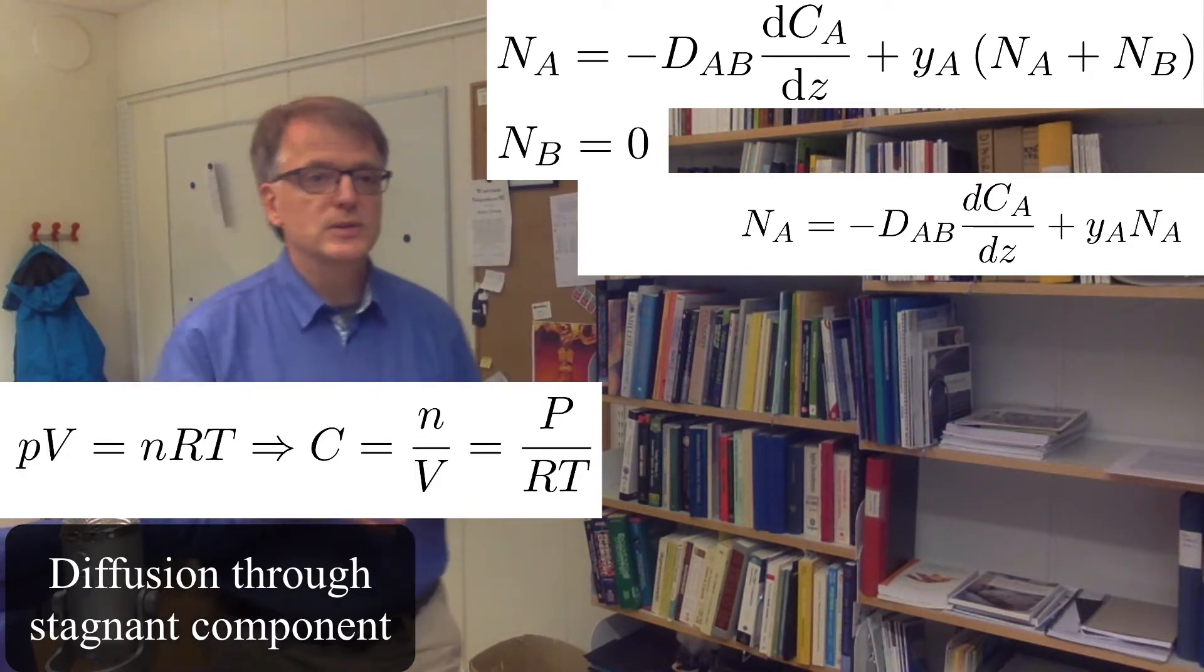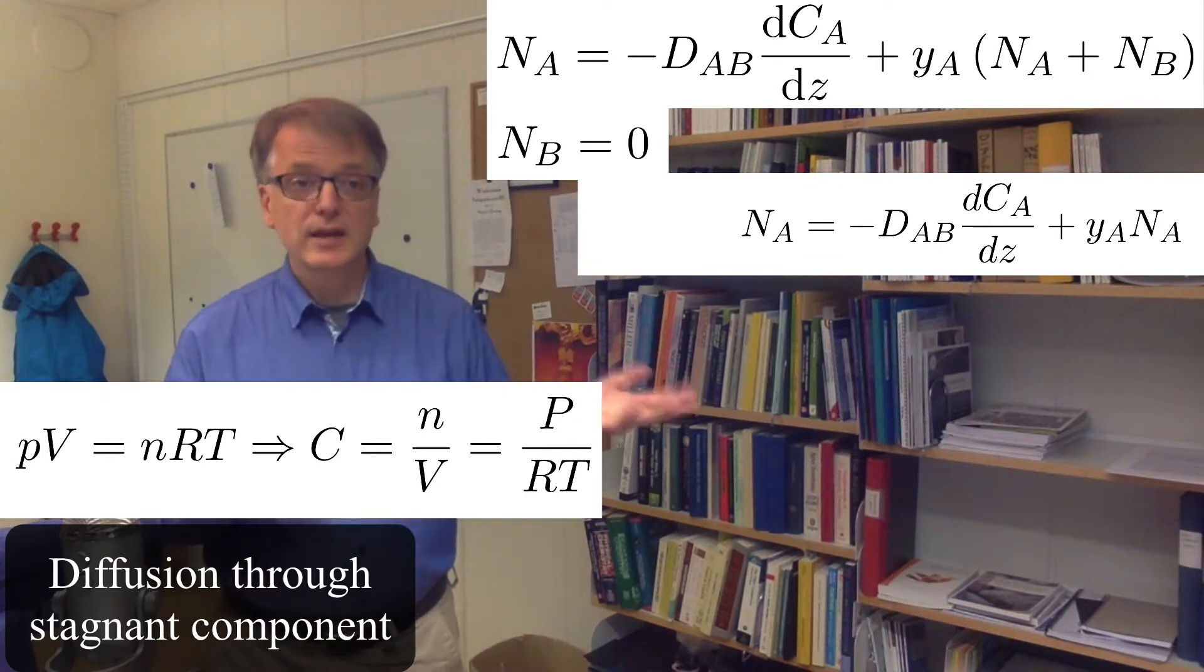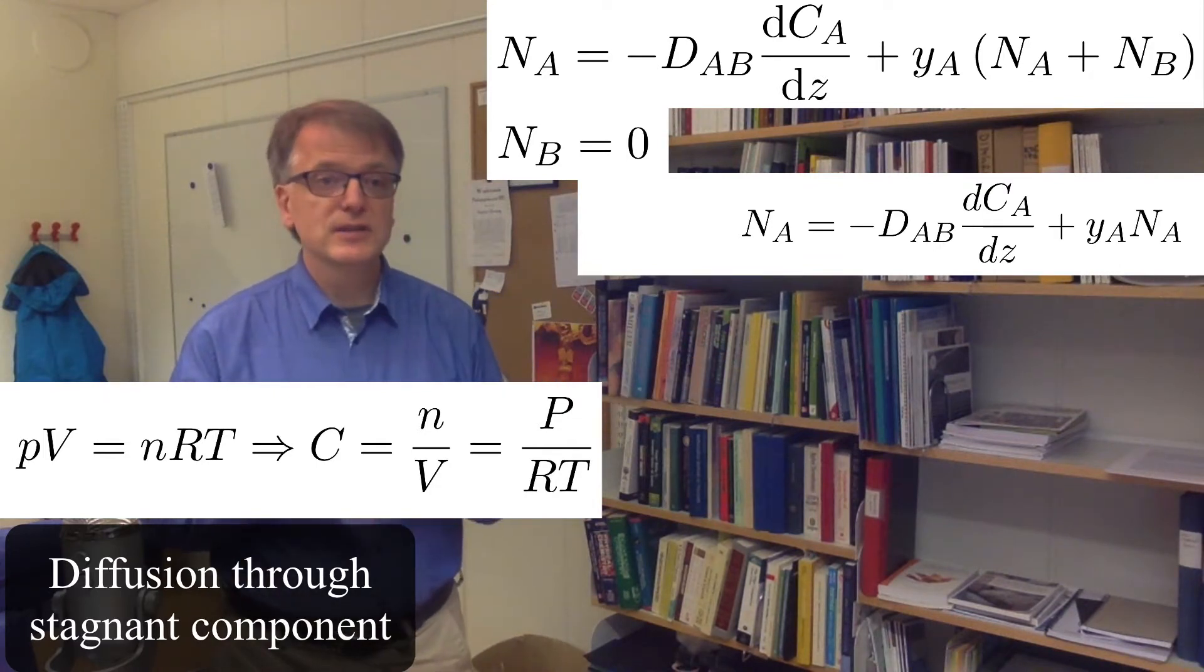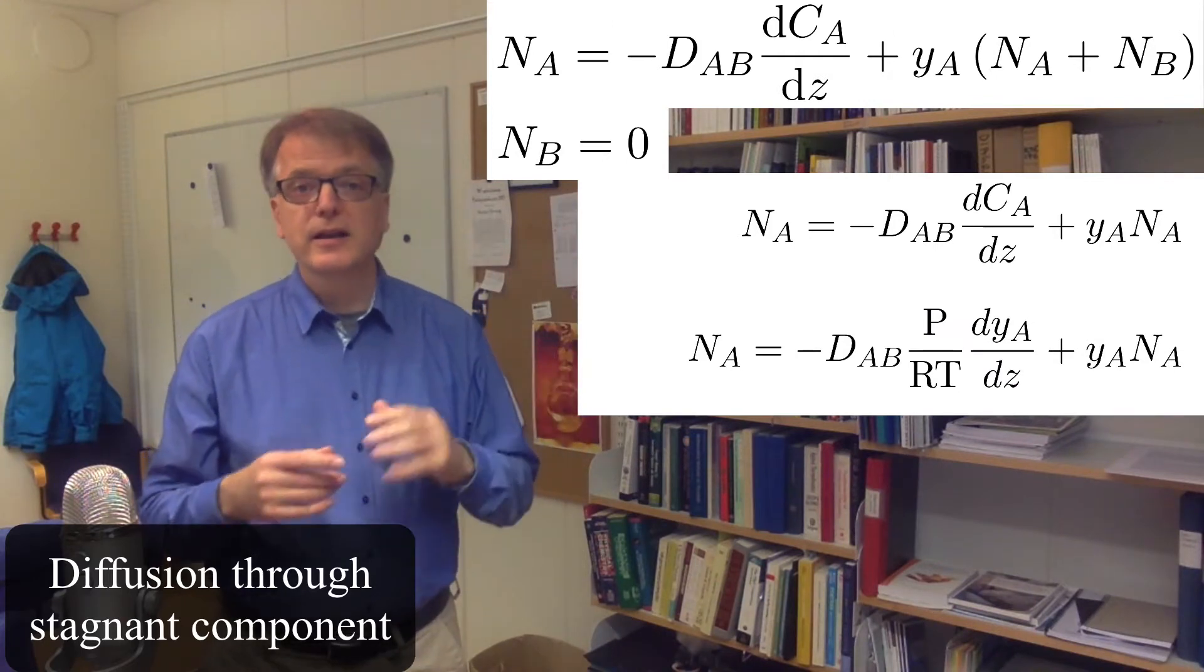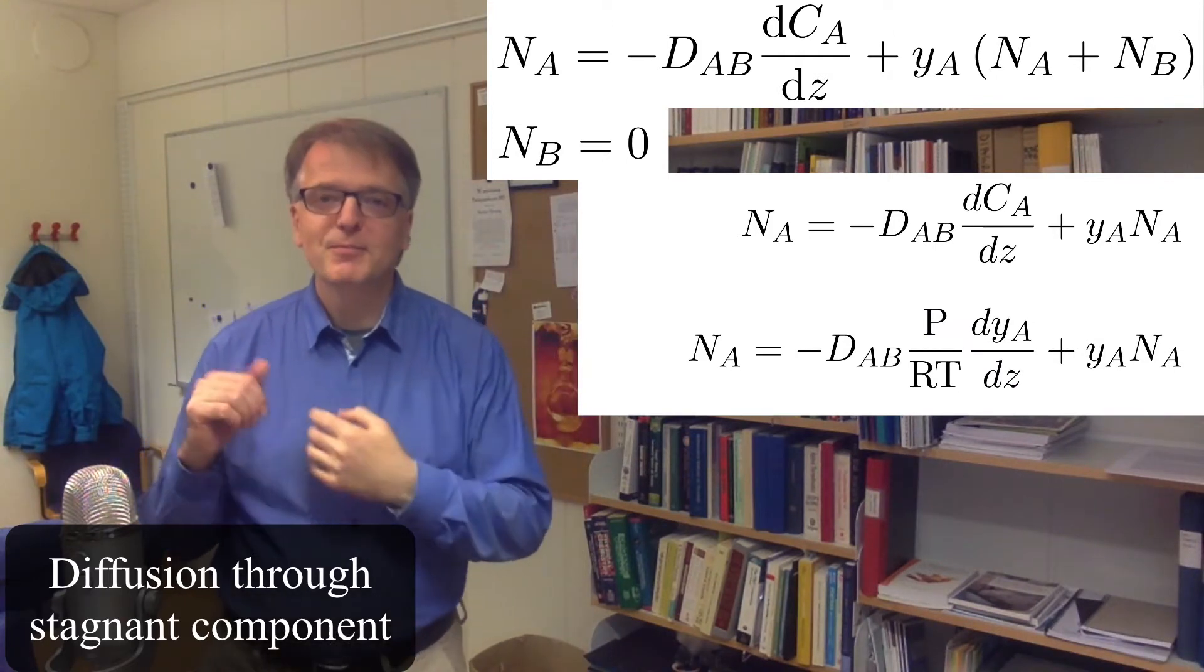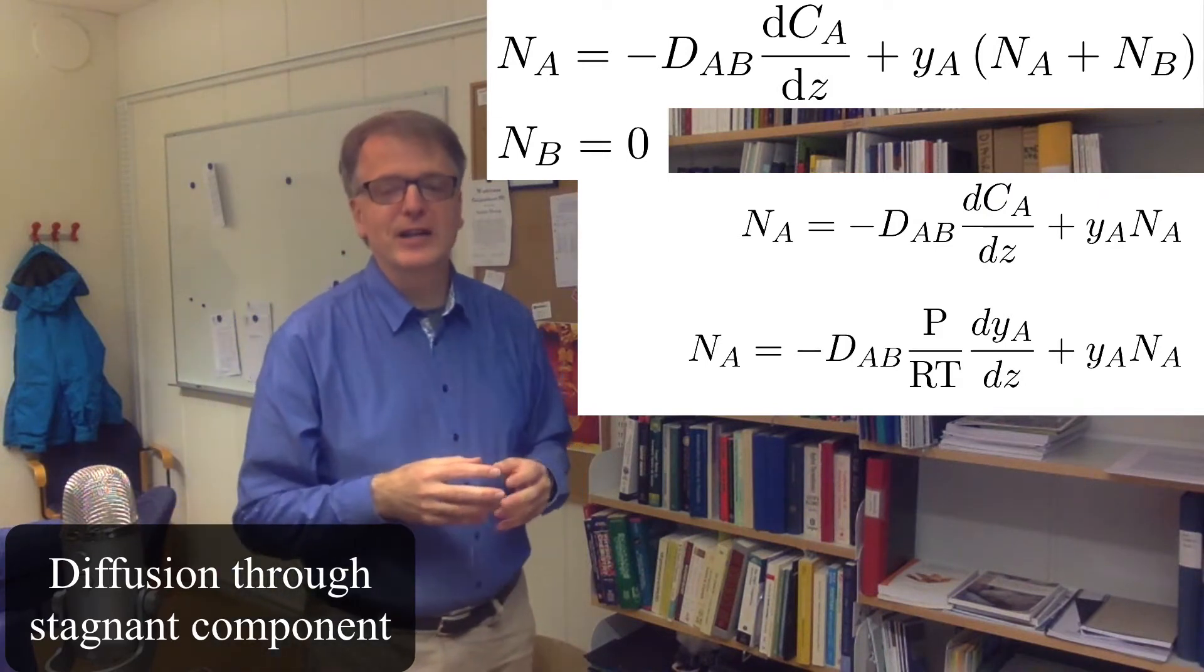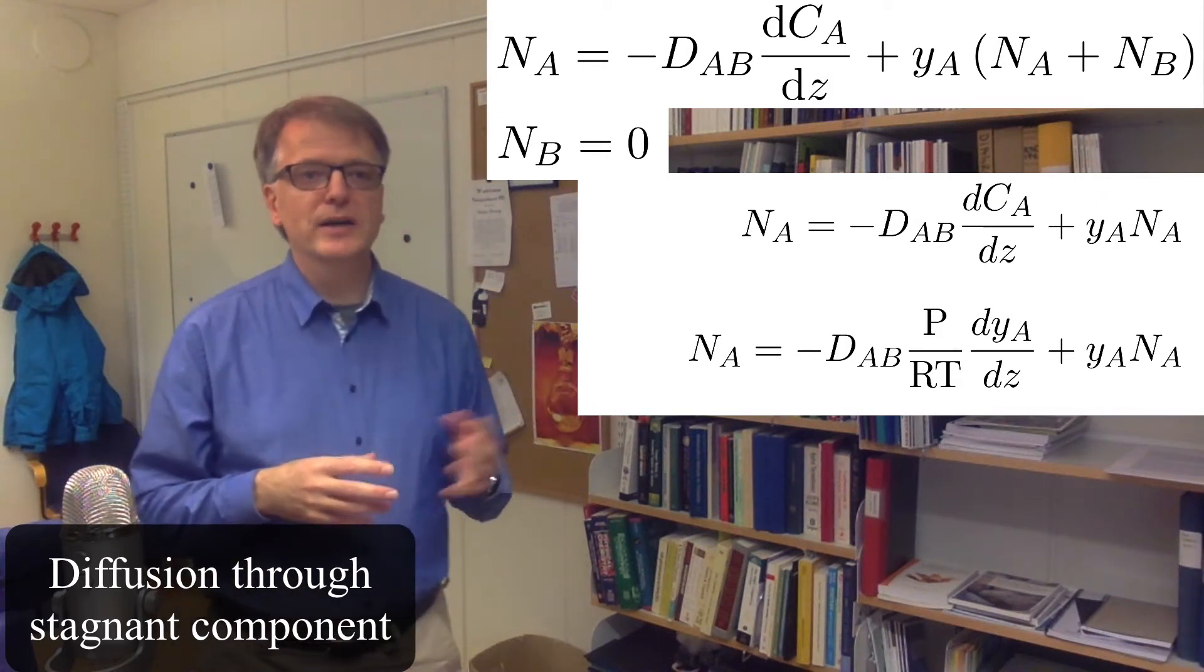Always use SI units. So we get here Na equals minus diffusivity times the total pressure divided by RT and the gradient in molar fraction rather than the gradient in concentration, plus yA times Na.